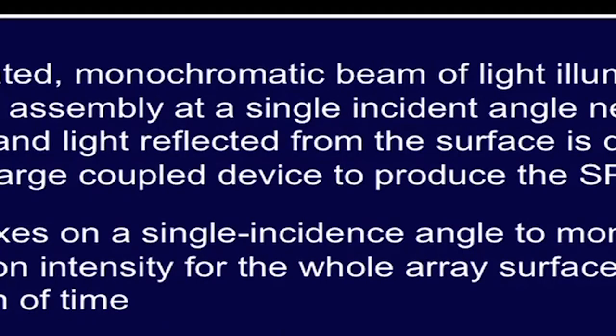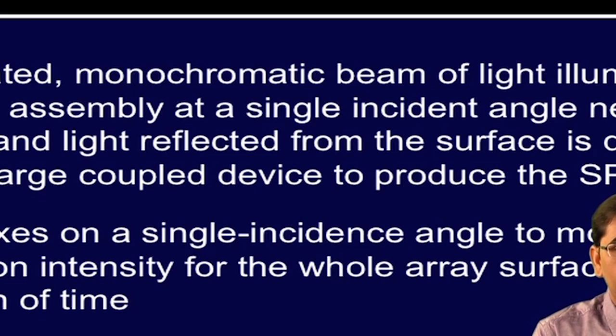The SPRI technique involves a collimated monochromatic beam of light which illuminates the sample assembly at a single incident angle near the SPR angle, and light reflected from the surface is detected with a charge-coupled device to produce the SPR image. The SPRI fixes on a single incident angle to monitor the reflection intensity for the whole array surface as a function of time.